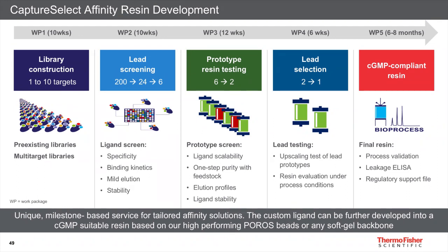Process development can be continued by the customer while we upgrade the resin to bioprocess grade for cGMP applications — Work Package 5. This consists of three main activities: validation of the production process, development of a leakage ELISA for QC purposes to detect leached ligands, and compilation of the regulatory support file.